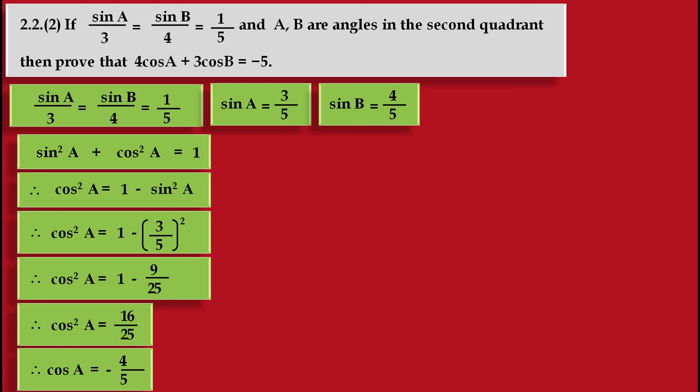Why is the value of cos A negative? Because angle A lies in the second quadrant, as given. In the second quadrant, the x-coordinate is negative and the y-coordinate is positive. cos A corresponds to the x-coordinate, and that is why the value of cos A is negative in the second quadrant. So it is minus 4 upon 5.